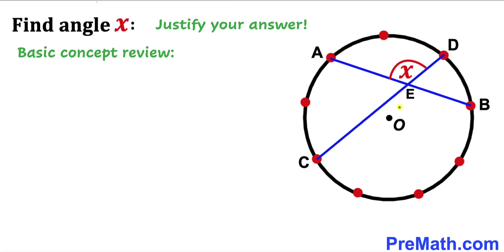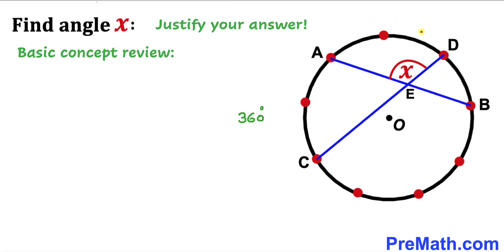Now let's recall the angle around the circle. We know that the whole revolution around this circle is 360 degrees — that is also called one cycle. And since this circle has been divided into nine parts, I'm going to divide 360 degrees by nine.